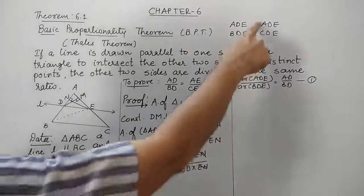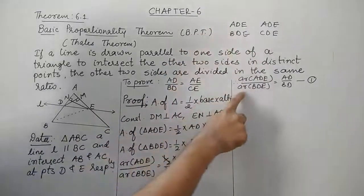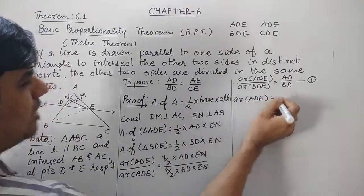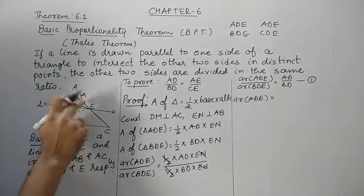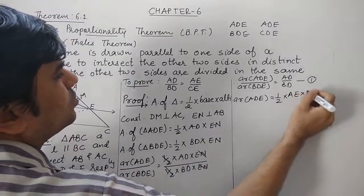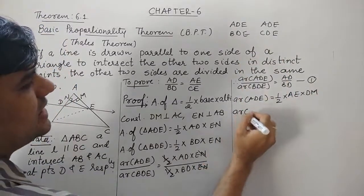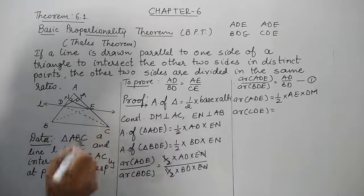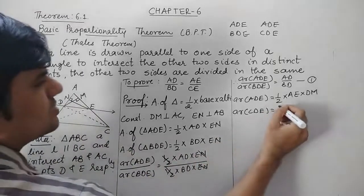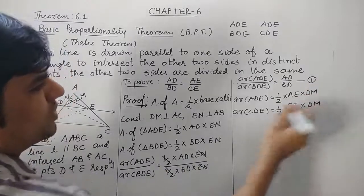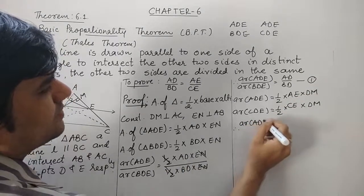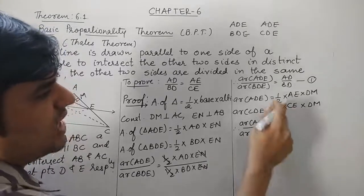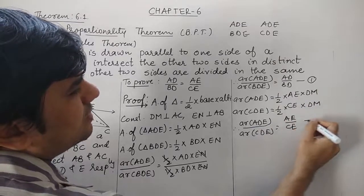Now we need the second equation — the same for triangles ADE and CDE. For triangle ADE, this time taking altitude DM: area of ADE = half × AE × DM. For triangle CDE, the base is CE and the altitude is DM: area of CDE = half × CE × DM. Taking the ratio: area of ADE upon area of CDE = (half × AE × DM) / (half × CE × DM). Half and DM cancel, giving AE/CE. This is equation number 2.